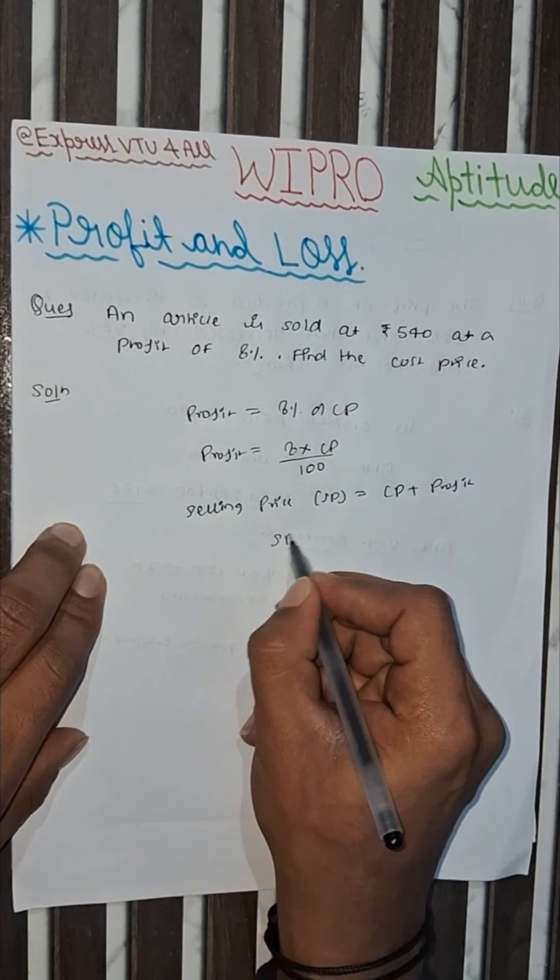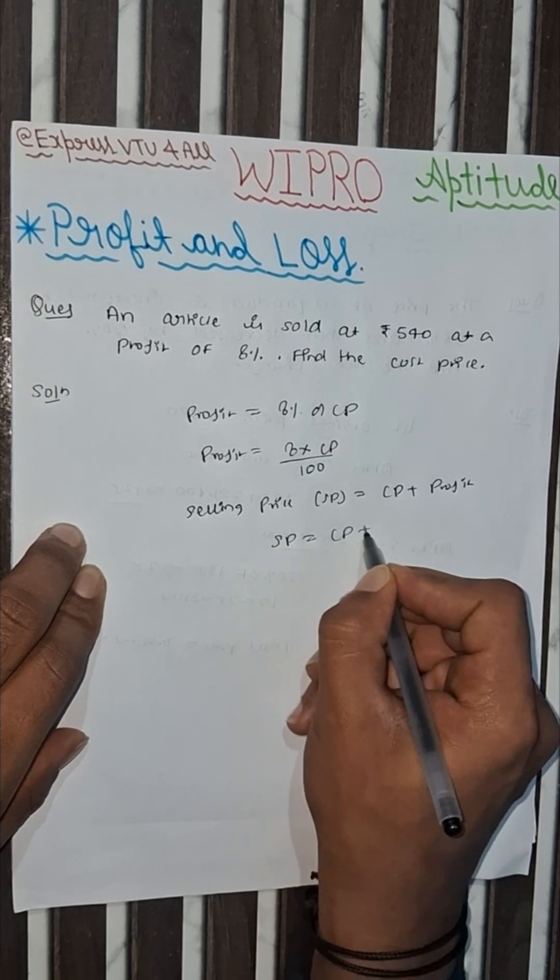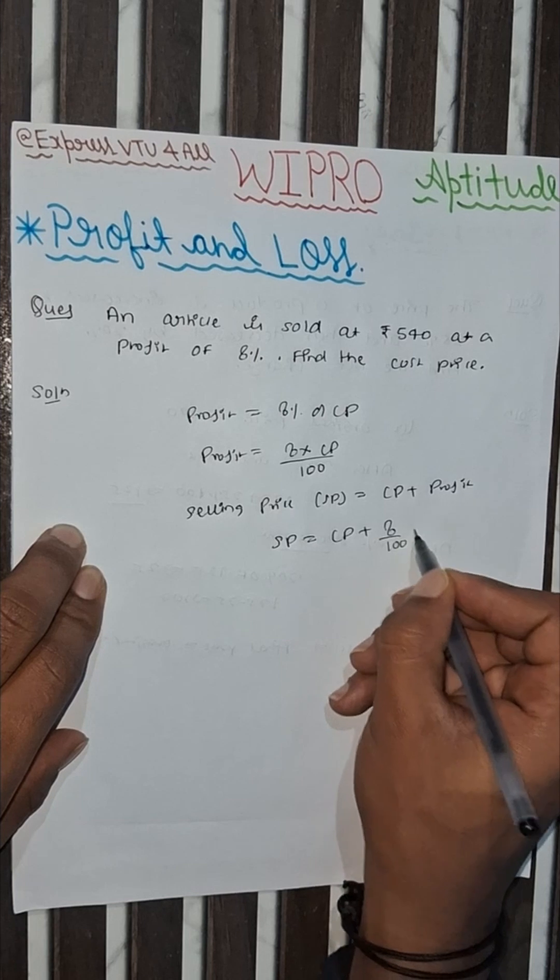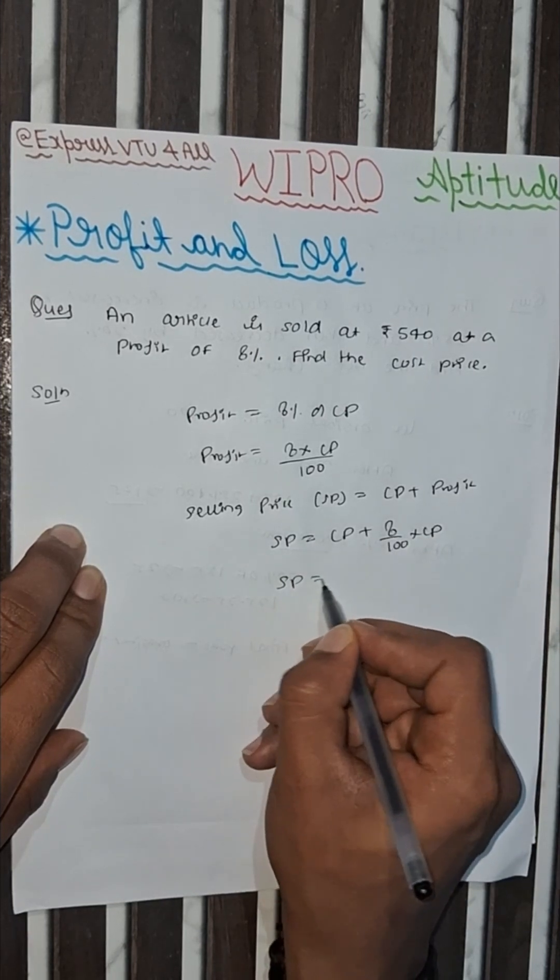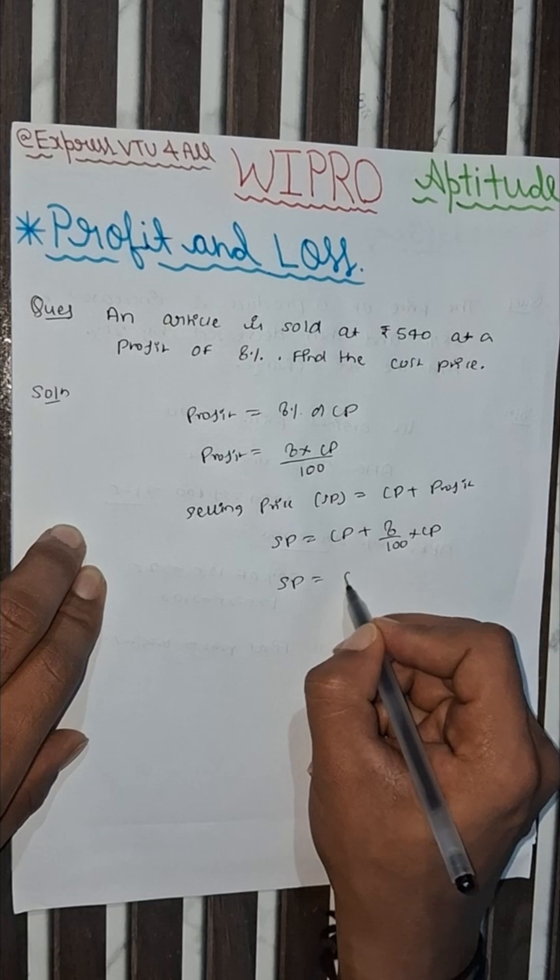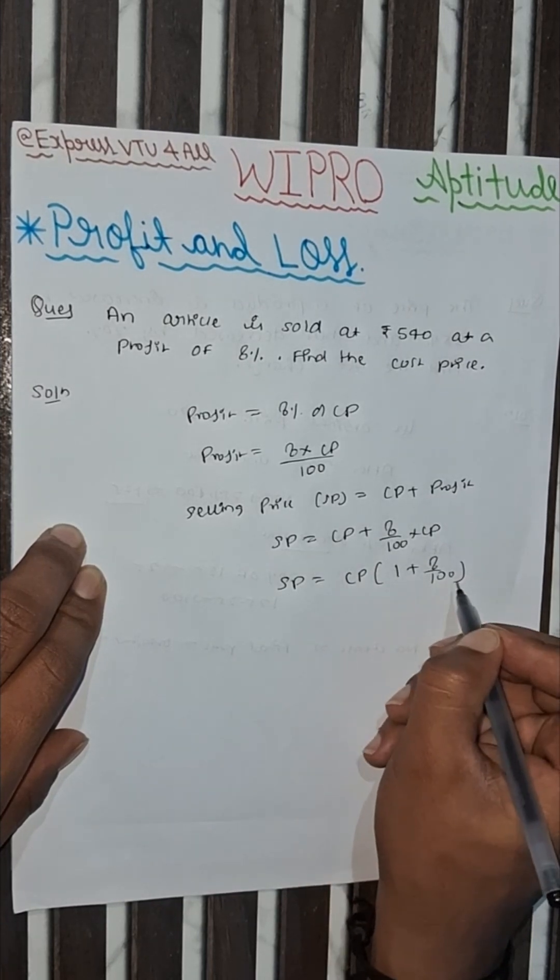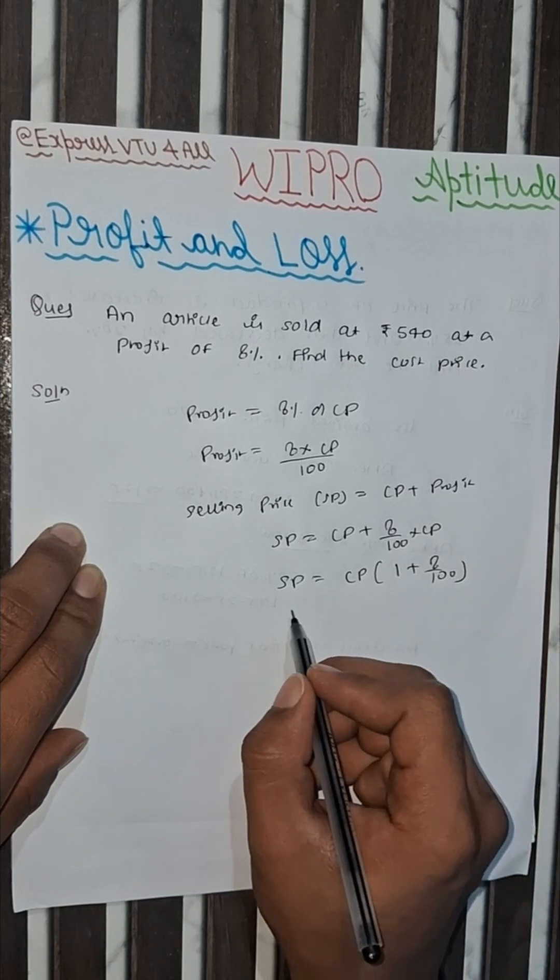SP equals CP plus profit. We already calculated profit as 8 by 100 into CP. We can take CP common from these terms: CP into 1 plus 8 by 100. We already know the value of selling price.